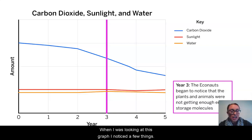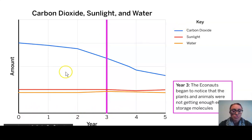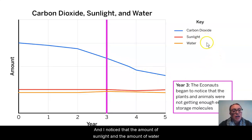When I was looking at this graph, I noticed a few things. I noticed that the amount of carbon dioxide over time was decreasing. It was going down and I noticed that the amount of sunlight and the amount of water was remaining fairly consistent over time because that line really wasn't increasing by much going up, really wasn't decreasing by much going down. It was pretty much staying flat and staying constant.